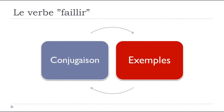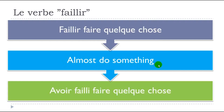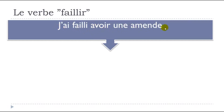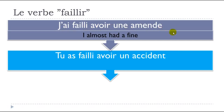Let's see a few examples. Failli faire quelque chose means 'almost do something.' So avoir failli faire quelque chose is what you use at the passé composé form. For example: j'ai failli avoir une amende — I almost had a fine.